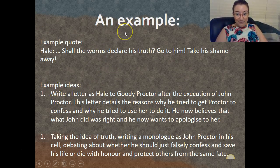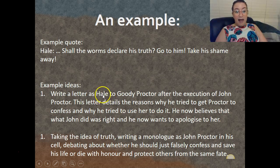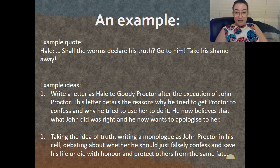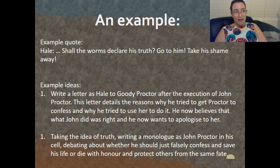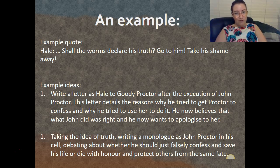Rather than write in that moment, I'm going to write after the text — a letter as Hale to Goody Proctor after the execution of John Proctor. This letter details the reasons why he tried to get Proctor to confess and why he tried to use her to do it. Hale in the moment would like to think he's doing it out of altruism or kindness towards John — but deep down he's really not. It's about him trying to alleviate his own sins.